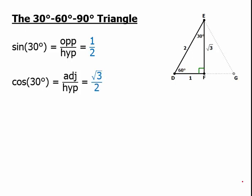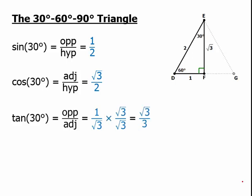For the tangent, the opposite is 1, and the adjacent is √3, so that's 1 over √3. Again, we have to rationalize this, multiply by √3 over √3, and we get √3 over 3. And that is the rationalized form of the tangent of 30.